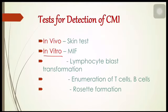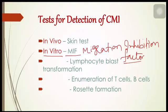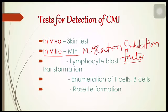The first in vitro test is the migration inhibition factor (MIF) test. Human leukocytes are incubated in capillary tubes containing culture fluid. Migration inhibition factor is produced by T cells on exposure to antigen. In the absence of antigen, leukocytes migrate to the open end of the tube and form a fan-like pattern. In the presence of antigen, that migration is inhibited — leukocytes are prevented from migrating to the open end — and this is used for detecting CMI.